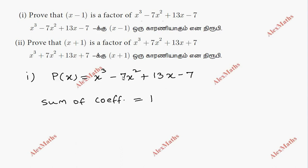First coefficient is 1, minus 7 plus 13 and last coefficient is minus 7. If we add, we have 0. So x minus 1 is a factor of P of x.